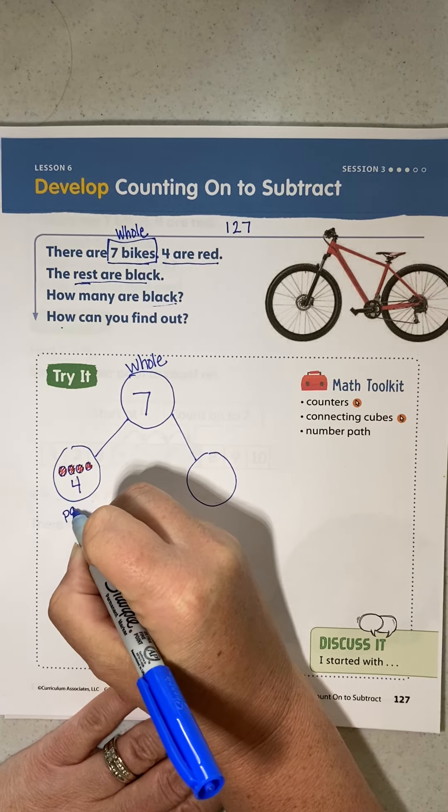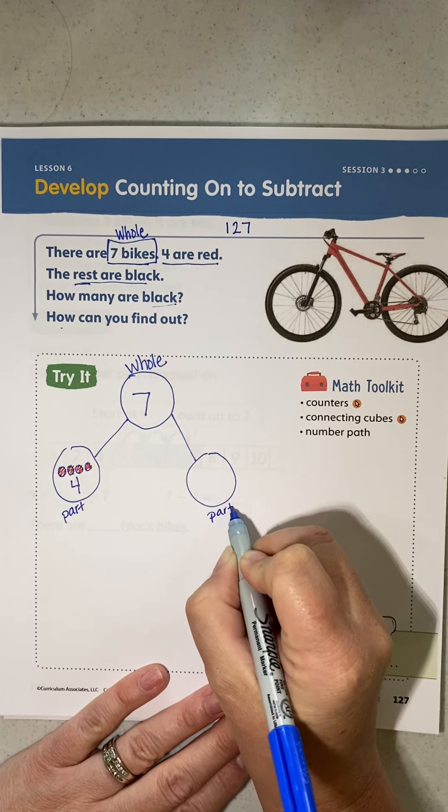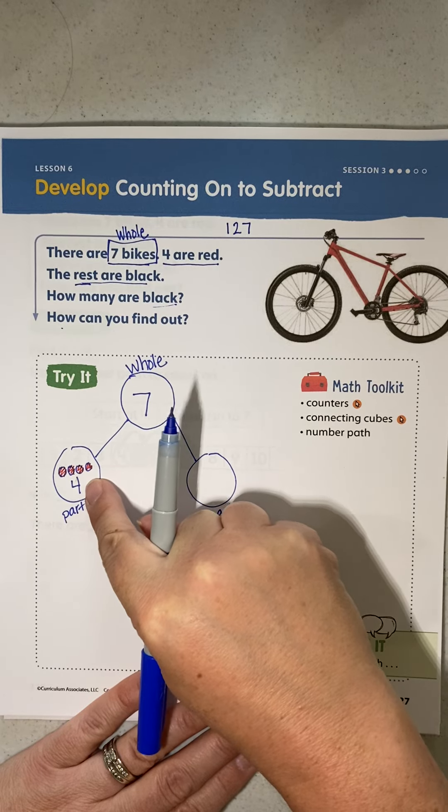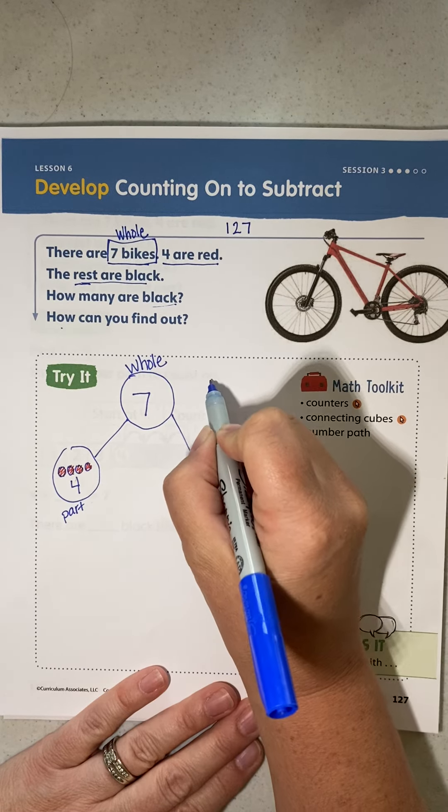We know that we have to count on from the part that we know. Do we know this part? No. We know this part? Yes. We count on from the part.